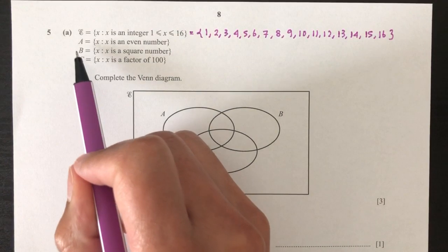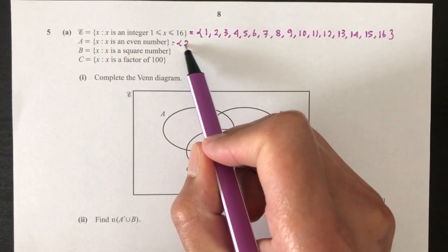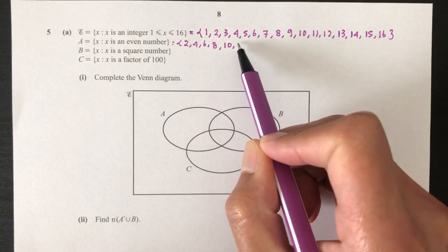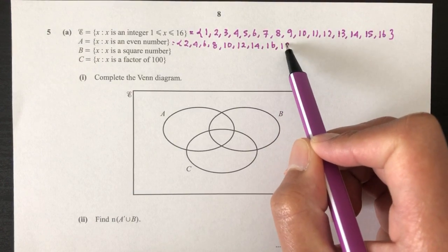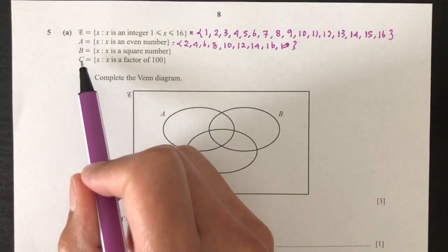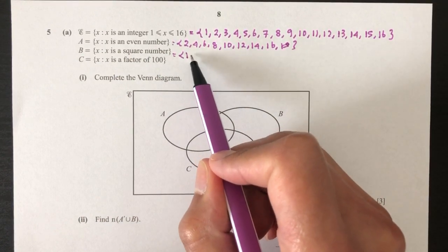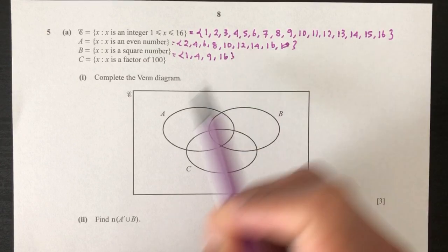Now A is even number so from this set even number will be 2, 4, 6, 8, 10, 12, 14, 16. So 16 we start at 16. Now B will be square number. That will be 1, 4, 9, 16.